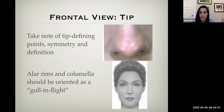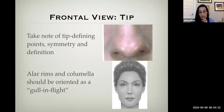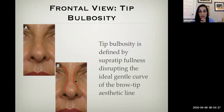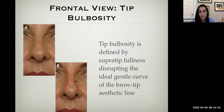Regarding tip defining points, we'd like to see two symmetric points. We also want the alar rims oriented like a gull in flight — we don't want the wings too elevated, the nostrils notched, or the columella hanging. A bulbous tip shows a rounded brow tip aesthetic line that does not gently curve toward the tip defining points, and we need to keep that in consideration.